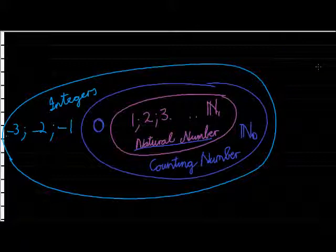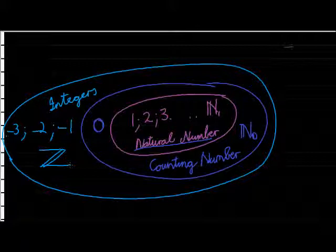For integers, we use a Z, where the diagonal of the Z has a double line. Integers are all of the whole numbers — the whole numbers that are negative, positive, and 0. A whole number just excludes any commas; it's numbers without commas.